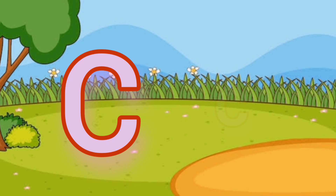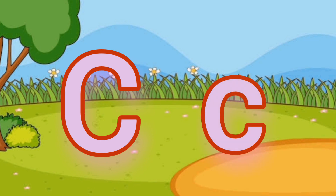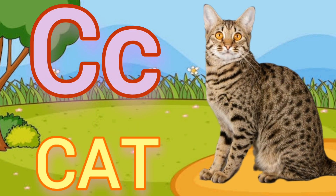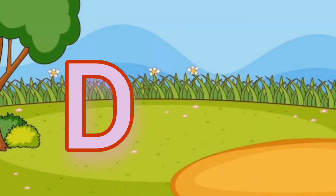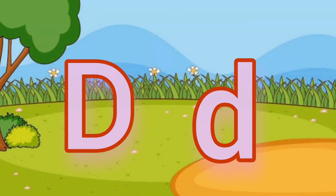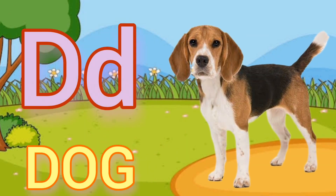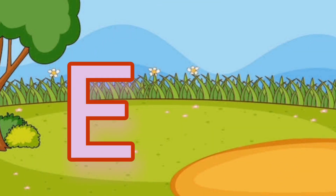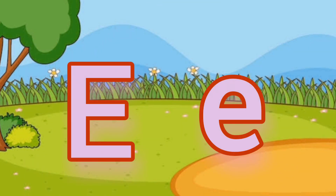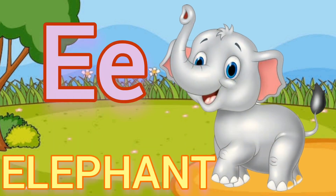Capital C, small c. C for cat. Capital D, small d. D for dog. Capital E, small e. E for elephant.